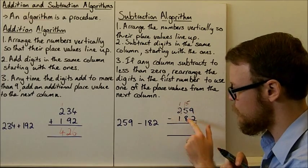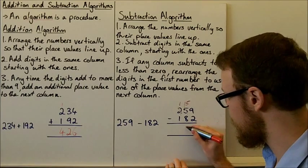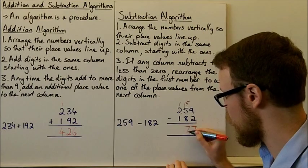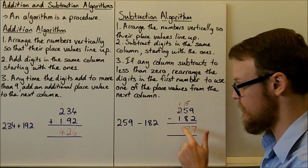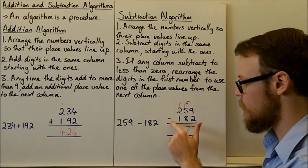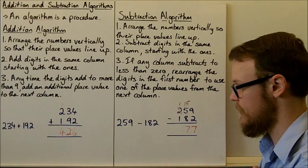So here, 15 subtracting 8 away from 15 is going to give us 7 and 1 subtract 1 is 0. So we can leave that blank. So 259 subtracting away 182 is the same as 77.